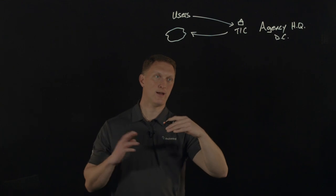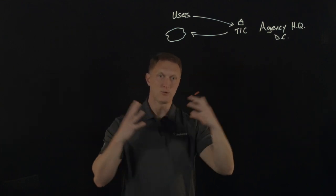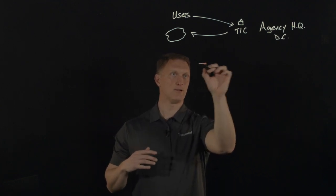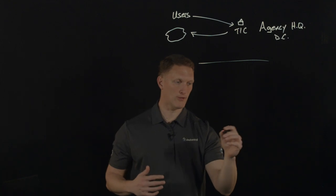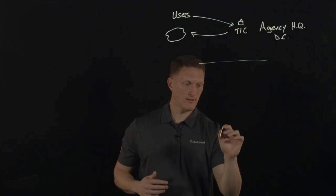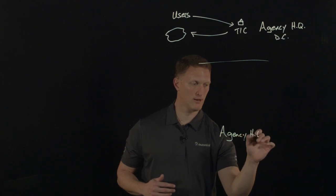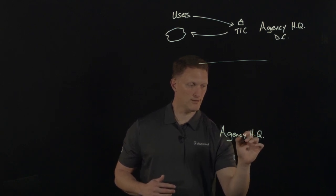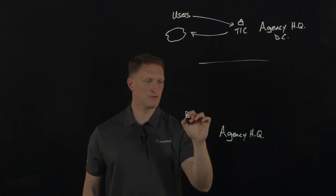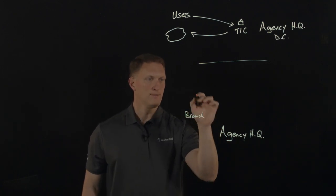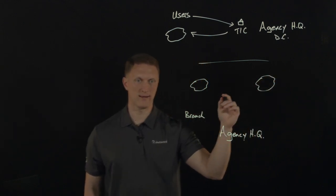But with TIC 3.0, there's a move from this consolidated architecture to a more distributed architecture. So I'll just put a little line here and show you a representation of TIC 3.0. So let's say you still have that same agency headquarters building with the data center and all that. But then maybe you have a branch location out here and maybe you have some cloud services, a couple of these cloud services, that kind of thing.